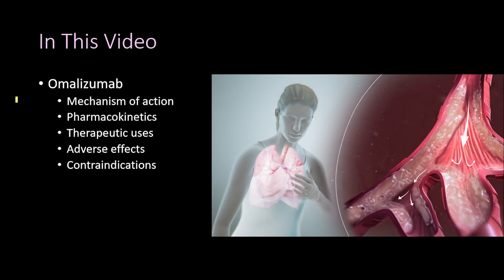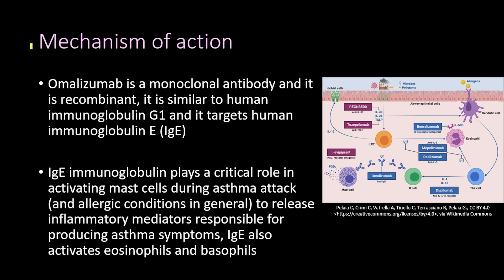Continuing our discussion about therapy for asthma, in this video we will talk about omalizumab. It is very important to know that omalizumab is a targeted therapy for asthma, meaning it has fewer side effects compared to other therapies. We will cover its mechanism of action, pharmacokinetics, therapeutic uses, adverse effects, and contraindications.